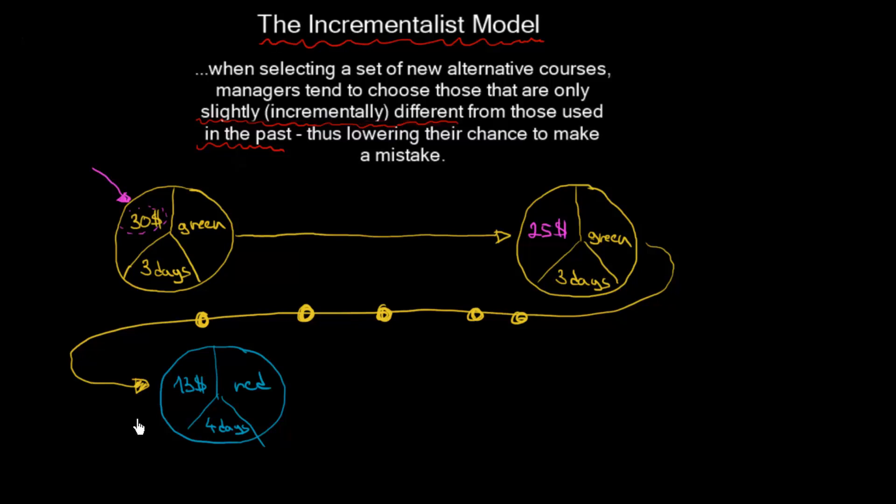This is the incrementalist model. Its main purpose is to lower the chance of making a mistake. We have only limited information available and never know what really is the best, so we try to lower this chance of a mistake by making just slight adjustments at a time.